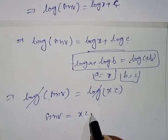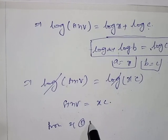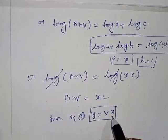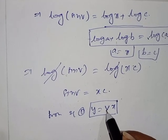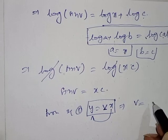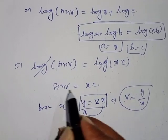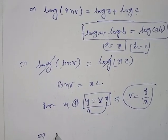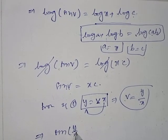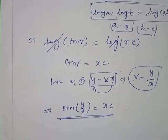From equation one, y = vx, so v = y/x. Substituting v = y/x into sin(v) = x·c, we get sin(y/x) = x·c. This is the solution of the given question.